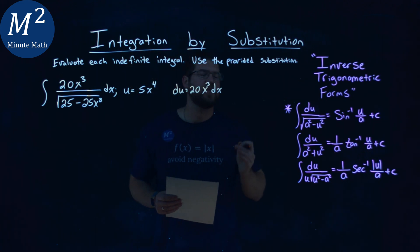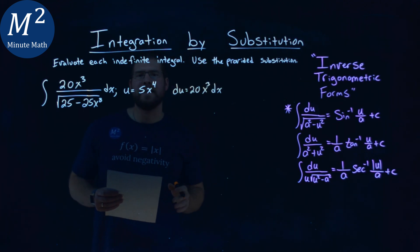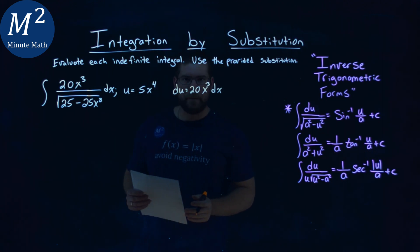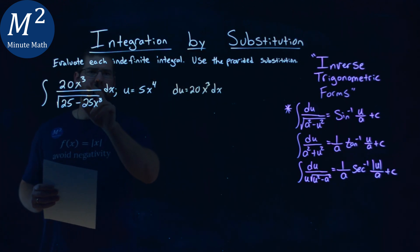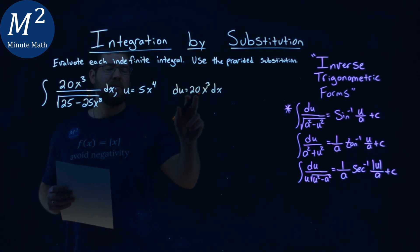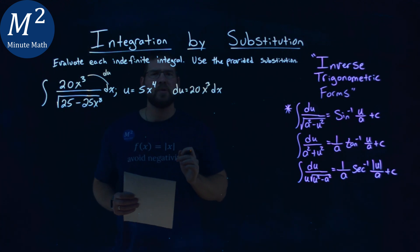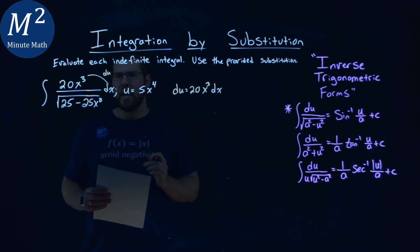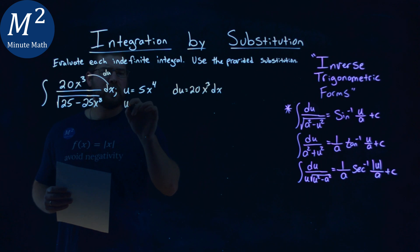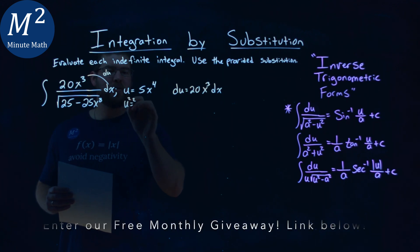Now, we're using our inverse trigonometric forms, so we need to find an a value that lines up here. So du lines up pretty good. We have 20x³ dx, so clearly here, that's my du. My u value was given to us as 5x⁴, but what is that squared? What is my u squared? U squared is right like that.